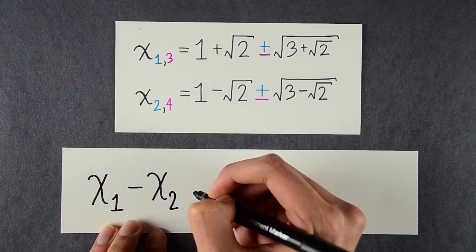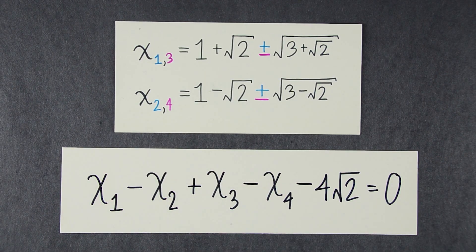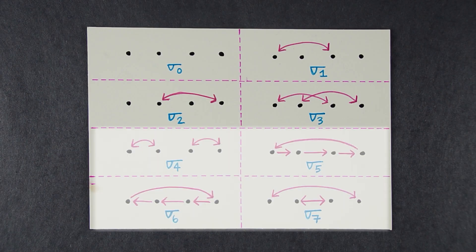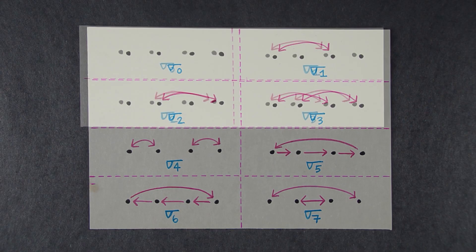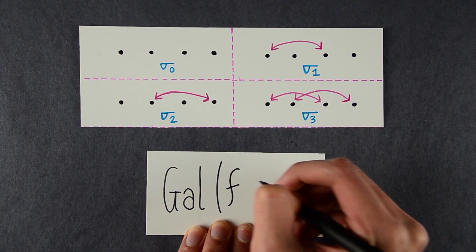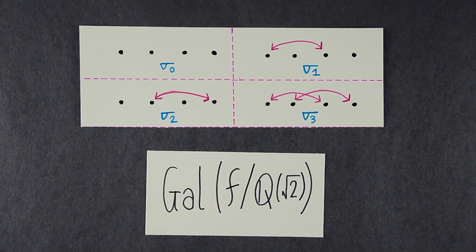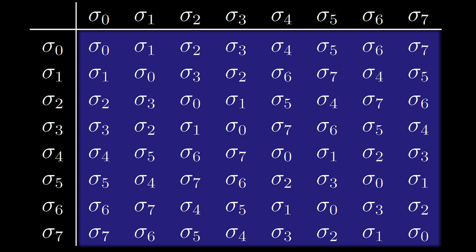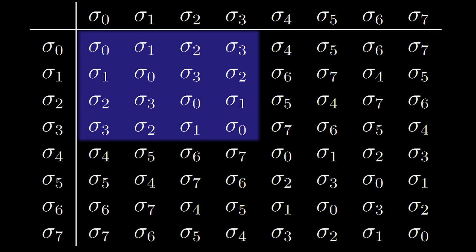Now, there's a relation with coefficients in the extended field that the roots satisfy. Four of our permutations don't preserve this new equation. The new Galois group has shrunk to this. This is called the Galois group of f over the field Q adjoined root 2. A nice way to see this is in a group table. This was our original group. This highlighted portion is the group after we extended the field.